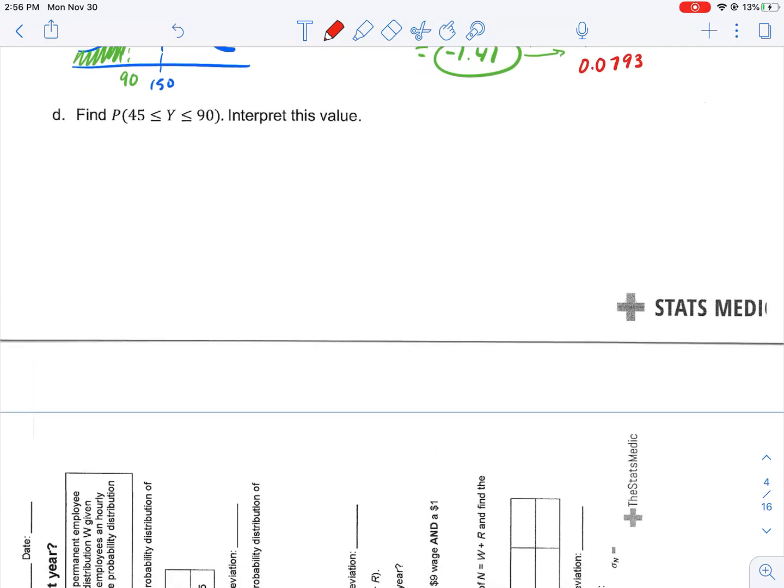Part D. Find the probability that 45 is less than Y is less than 90. Interpret this value. Well, again, let's draw a picture here. Because it's normally distributed and it has a mean of 150 and a standard deviation of 42.7, here is my mean. Here is my 90. Here's that 45.